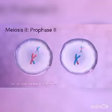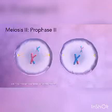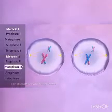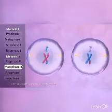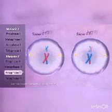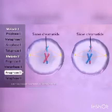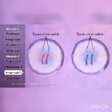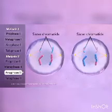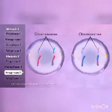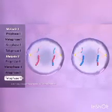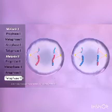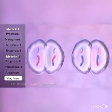Both cells now enter meiosis two. Unlike meiosis one, DNA does not replicate before meiosis two begins. In prophase two, the nuclear membrane disappears and spindle fibers extend from two sets of centrioles. During metaphase two, chromosomes in each cell line up at the equator and attach to spindle fibers from both poles.